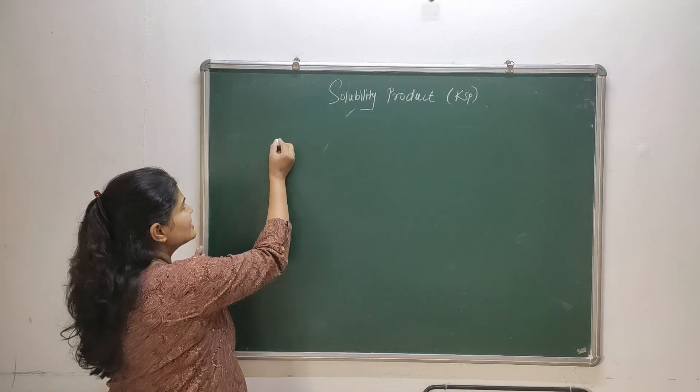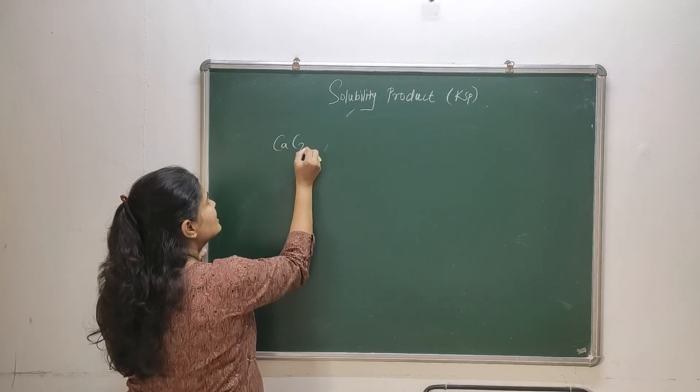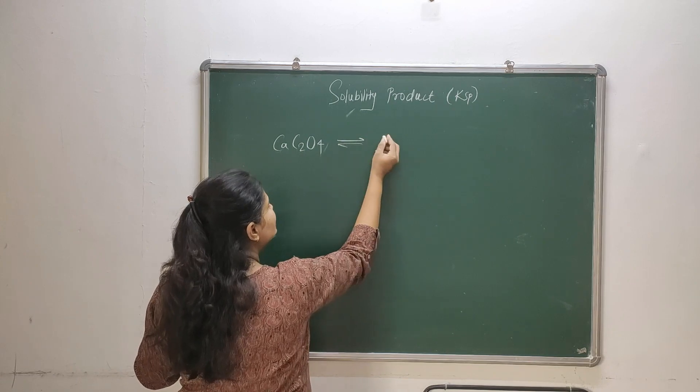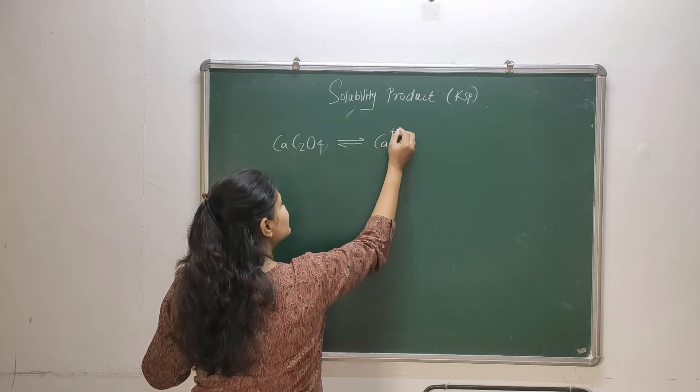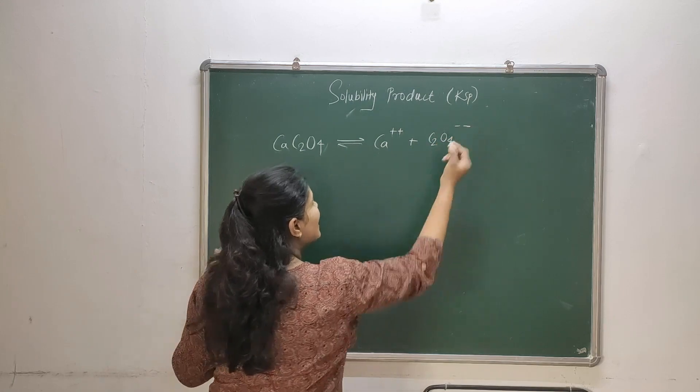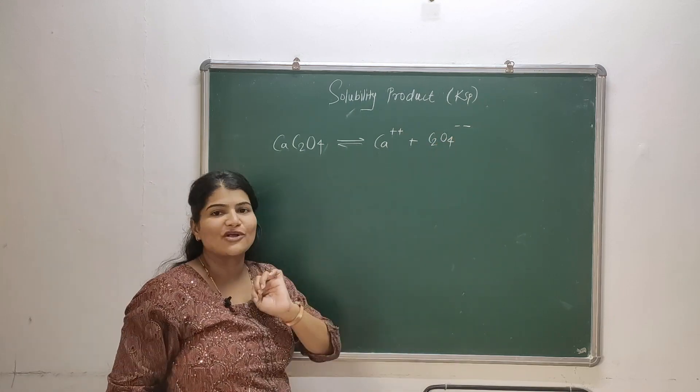Let's take an example. For example, I have calcium oxalate as my solute and I want to dissolve it in water. Then what happens? First it forms ions like calcium ions and oxalate ions, and these ions get solvated.